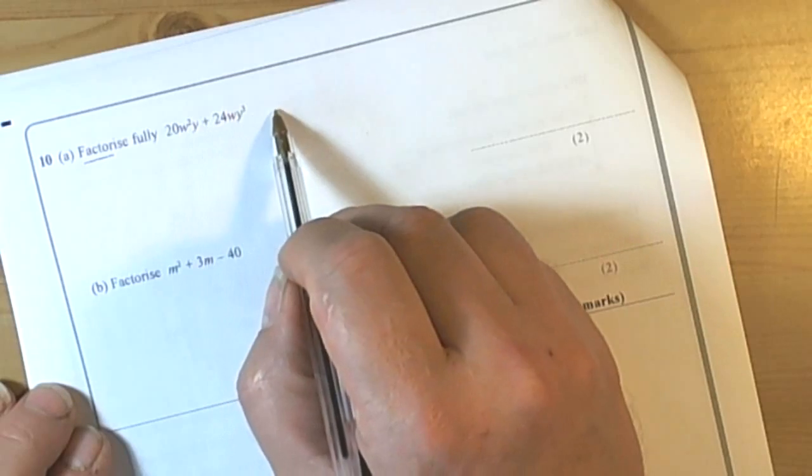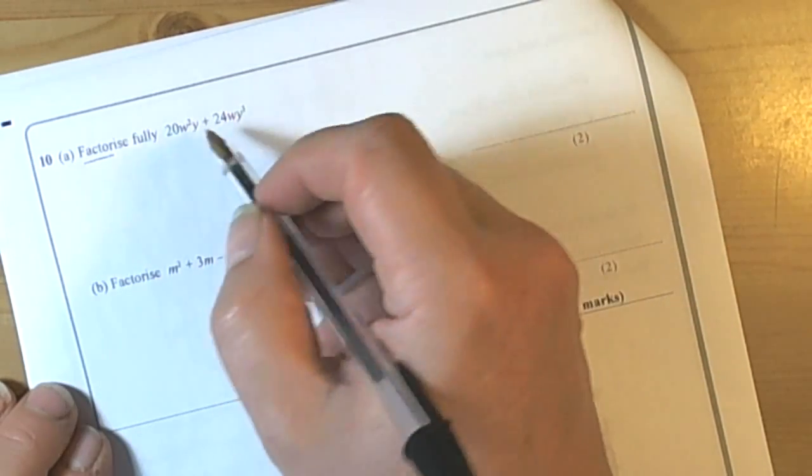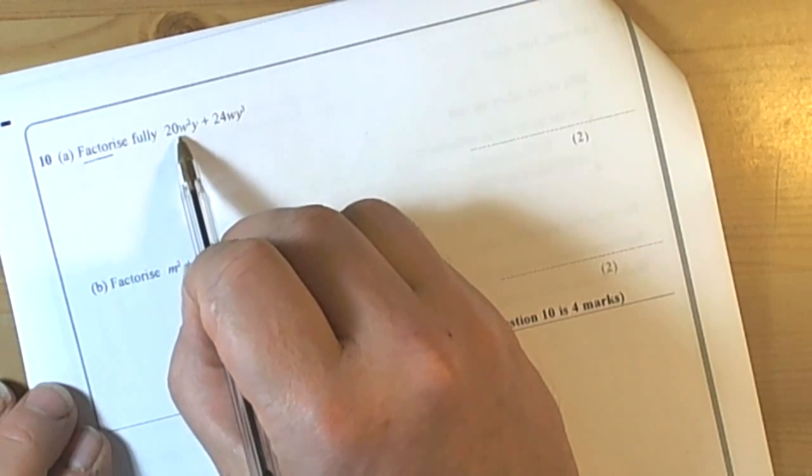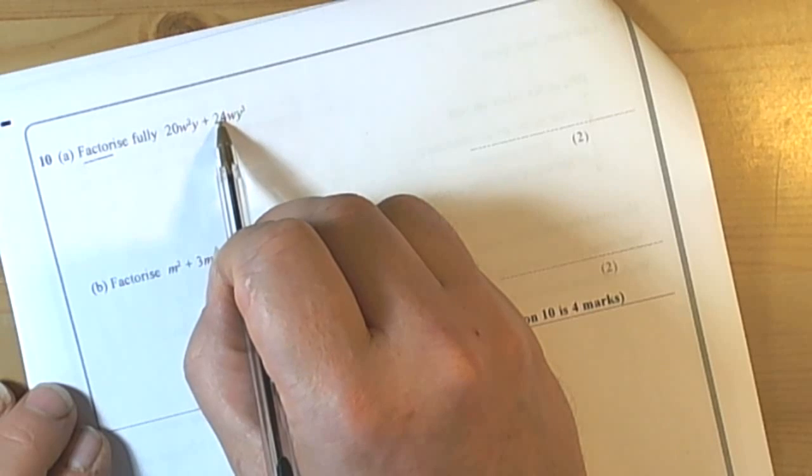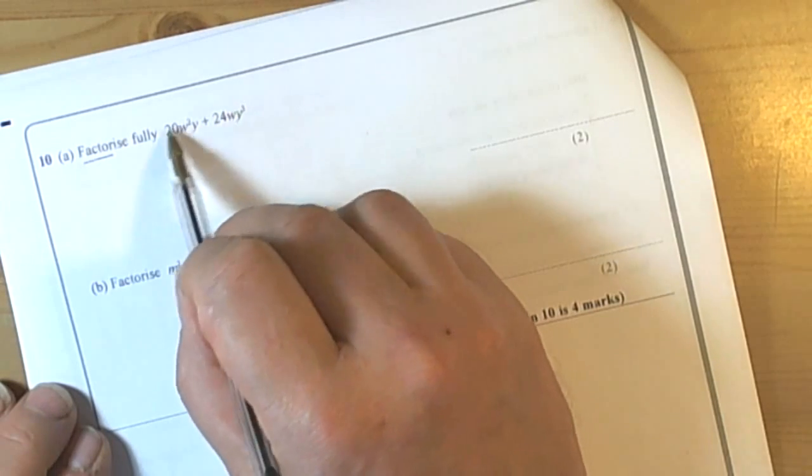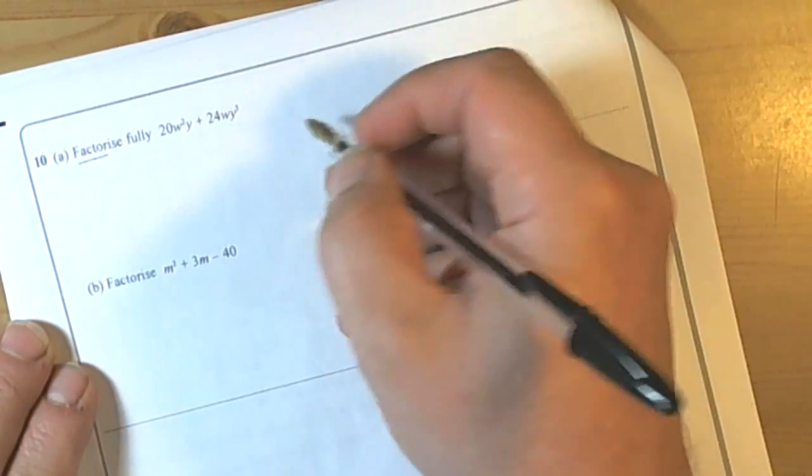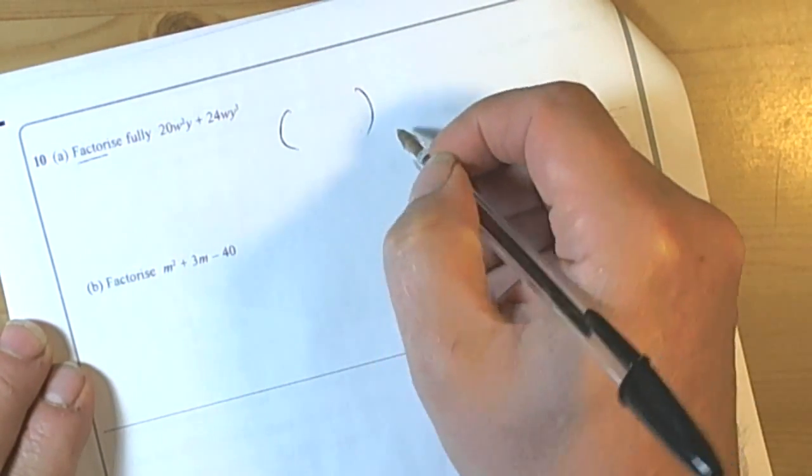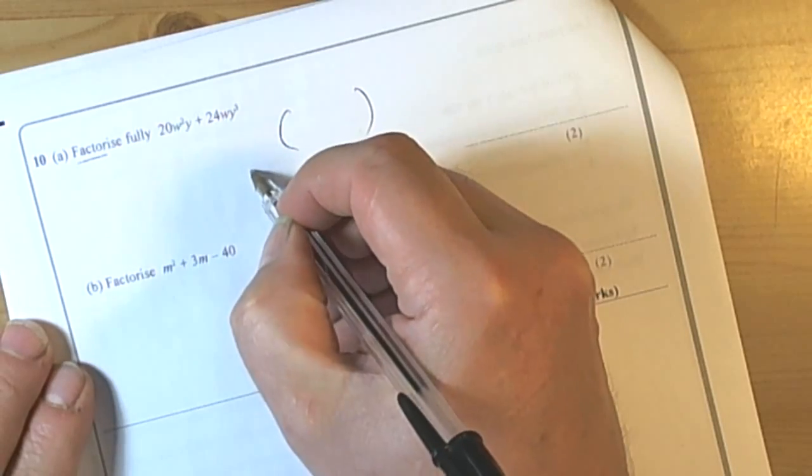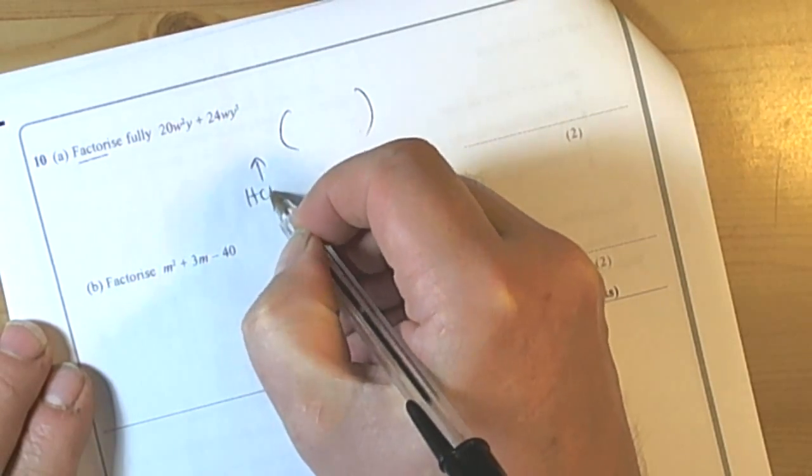So let's have a look. 20 and 24, common factor 4. W and W, so there is a common factor to both terms, so it will be a single bracket factorisation. That means we're going to be looking for something to go inside the bracket and we're looking for the highest common factor of both terms to go outside the bracket.